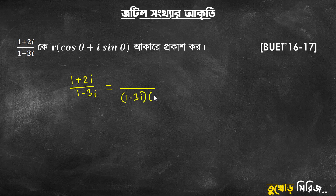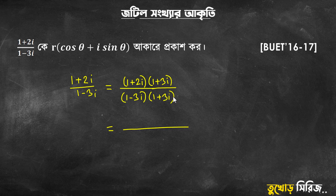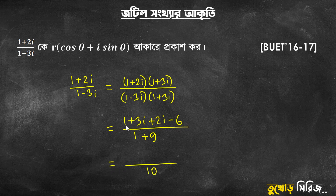We have 1 minus 3i over 1 plus 3i, multiplied by 1 plus 2i into 1 plus 2i. Using the formula a² minus b²: 1 plus 9i² — i² is negative — so positive 1. We get 1 plus 2i plus 6i² which is negative 6, giving us 1 minus 6 = negative 5, plus 5i.